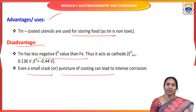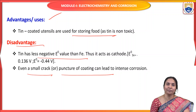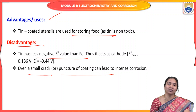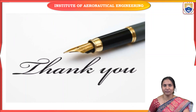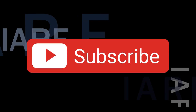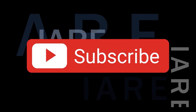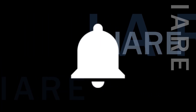In this session, we learned about important questions on electrochemical cells, hot dipping methods, surface coating, and cathodic protection — all covered under electrochemistry and corrosion. Thank you. Like, share and subscribe, and hit the bell icon for more updates.